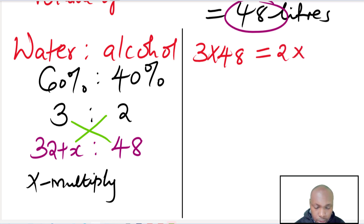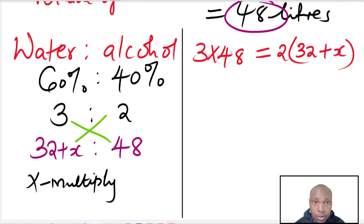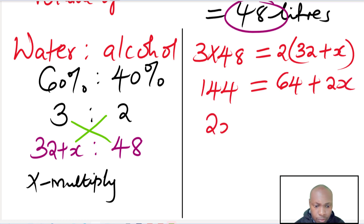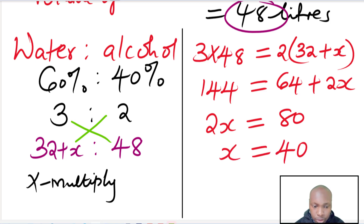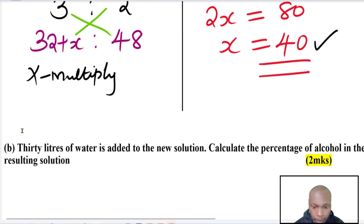Cross multiplying gives 3 times 48 equals 2 times (32 plus x), so 144 equals 64 plus 2x. Solving: 2x equals 144 minus 64 equals 80, so x equals 40. The volume of water added is therefore 40 liters.